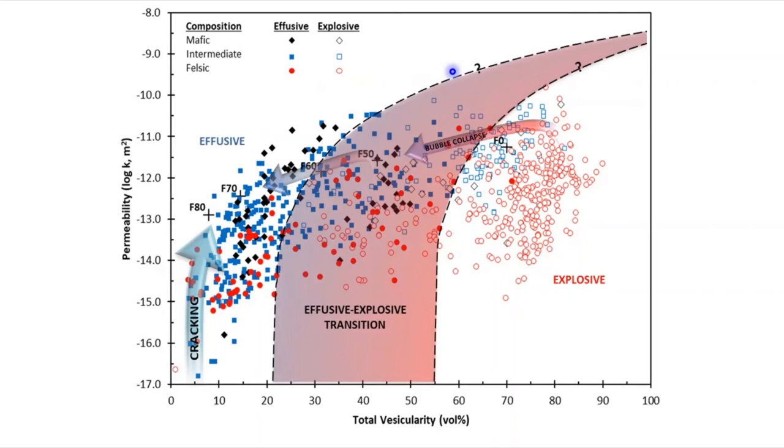Samples with high permeability and porosity can still erupt explosively because they fail to reach the very high permeability threshold for bubble-dominated systems.